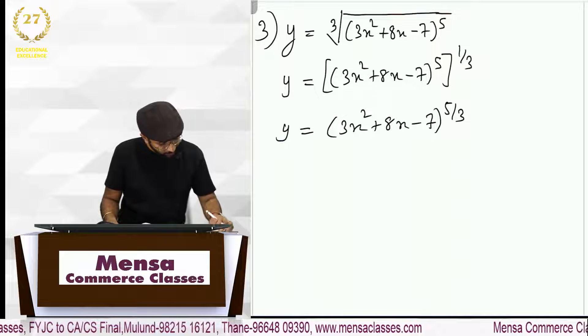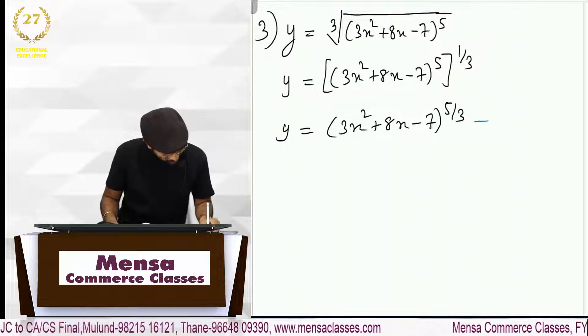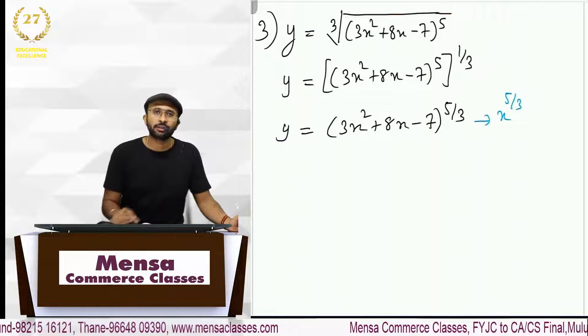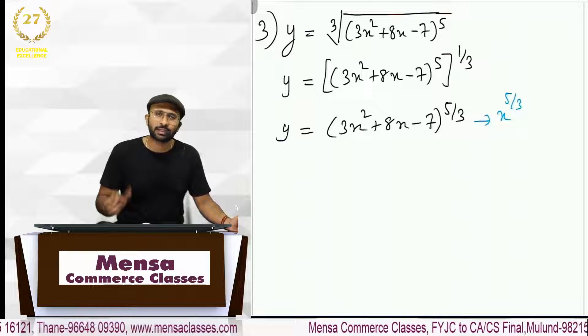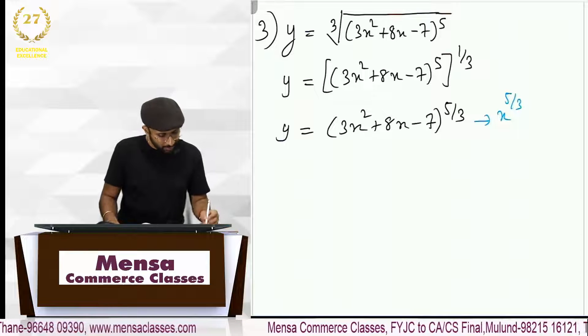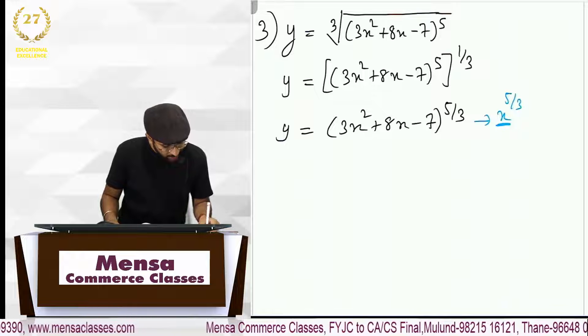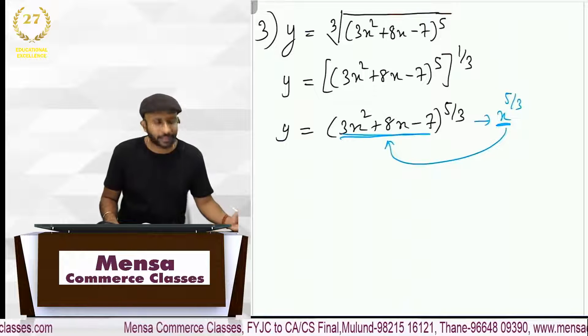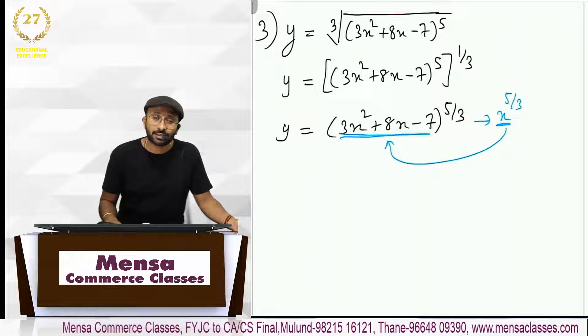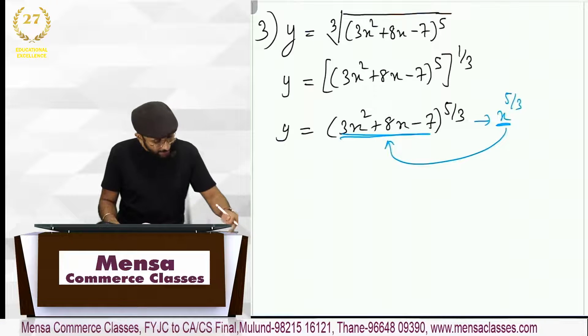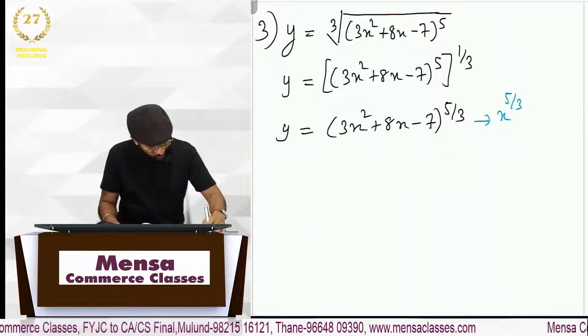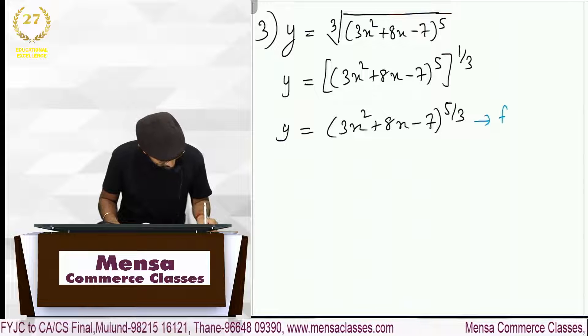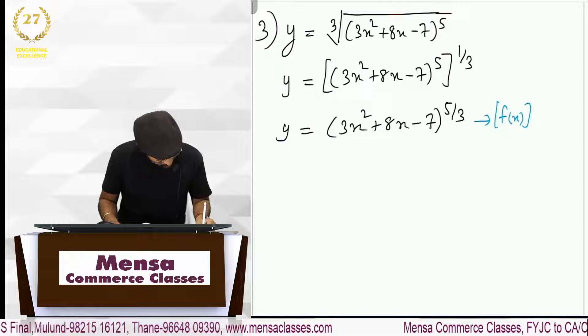अच्छा now we know that अगर x raised to 5 by 3 होता तो मैं इसको x raised to n वाला standard formula से derivate कर लेता. But sir clearly अपने को दिखता है कि standard formula में जिदर x है वो लोग ने x के जगा पे कुछ और दिया हुआ है तो हम उसको f of x की तरह treat करेंगे.